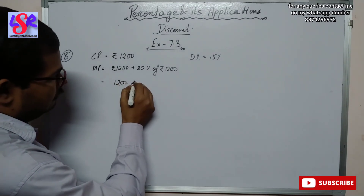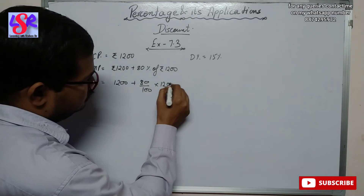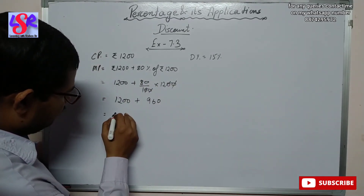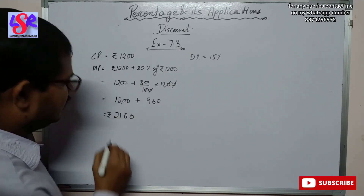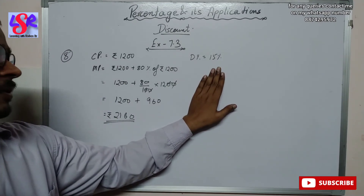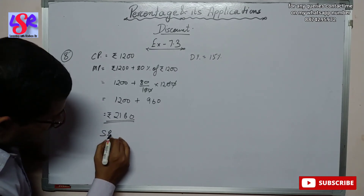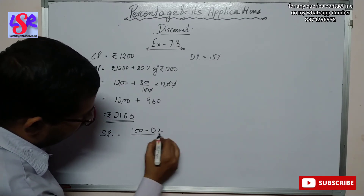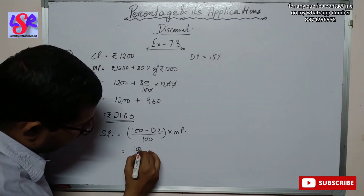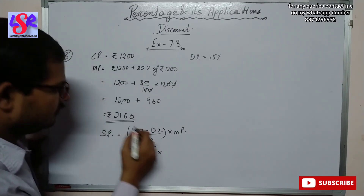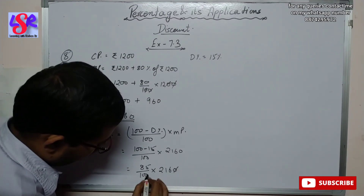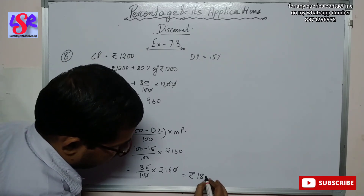Mark Price = 1200 + (80/100 × 1200) = 1200 + 960 = rupees 2160. Now with a 15% discount on the mark price, SP = (100 − 15) / 100 × 2160 = 85 / 100 × 2160 = rupees 1836. So the selling price after giving a 15% discount is rupees 1836.